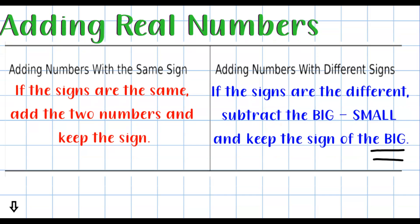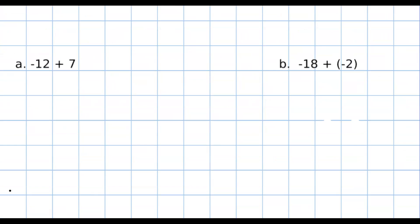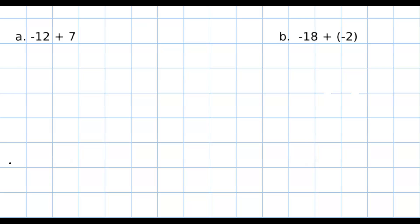So here's what that looks like. Here's an example. Negative 12 plus 7. Negative 12 is a negative number, 7 is a positive number. These signs are different. So all I'm going to do is take the numbers themselves, 12 and 7, and subtract the big one minus the small one, and get 5. Now, the bigger number in this problem is 12, and it's negative. So I'm going to keep that sign, negative 5.